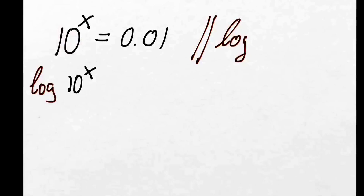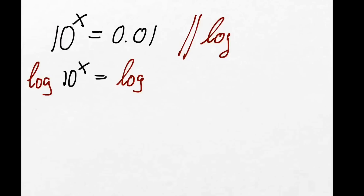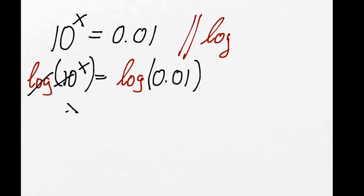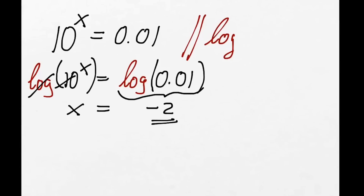The next question was solve for x if 10 to the power of x equals 0.01. Again, we do exactly the same process — we try to get rid of the '10 to the power of'. We take both sides log to the base of 10: log(10^x) equals log(0.01). Log and 10 eliminate each other, so we've got x equals log(0.01), and if we put that into a calculator we get minus 2.